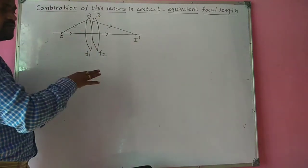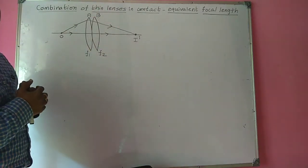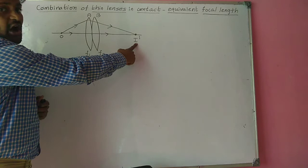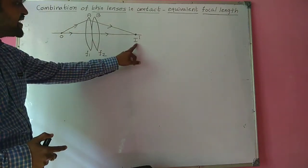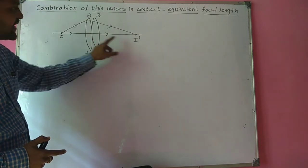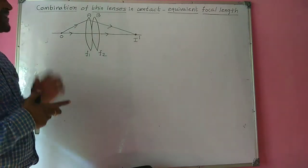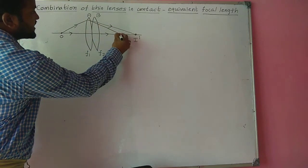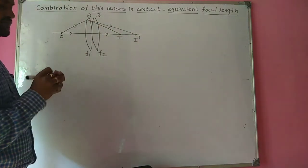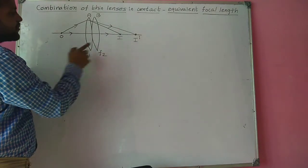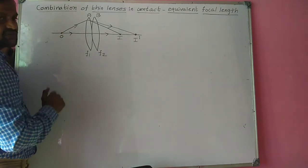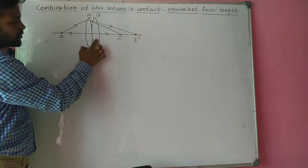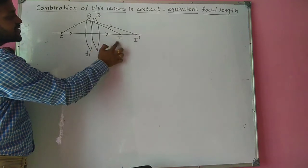Now, if we take lens B in combination with lens A, then the image formed by lens A, I dash, acts as a virtual object for lens B. And I is the final image formed by lens B due to the combination.